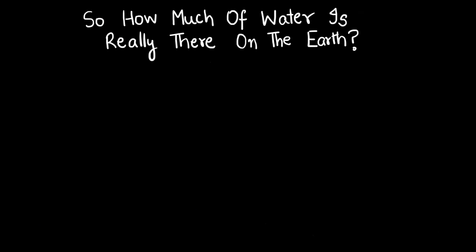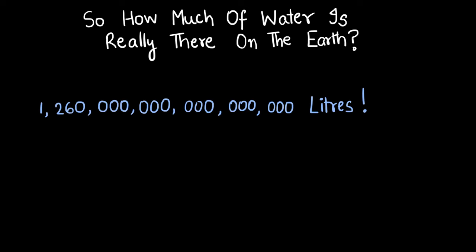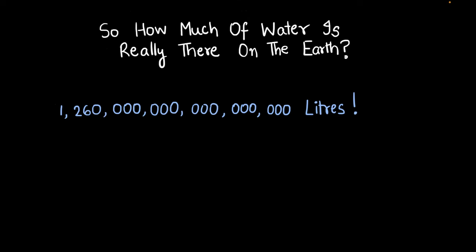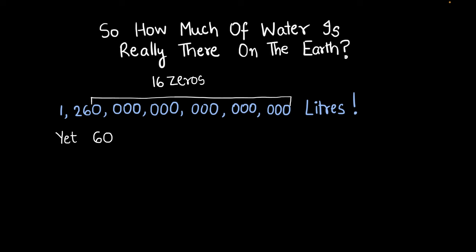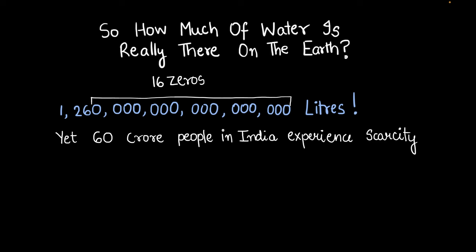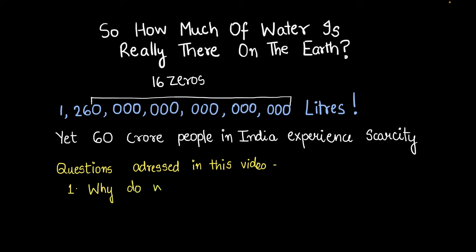So how much water is really there on Earth? There's one thousand two hundred and sixty quintillion liters of water — that's a huge amount with 16 zeros. Yet 60 crore people in India experience water scarcity. In this video we're going to answer two questions: why do we still have water scarcity, and how can we save water?